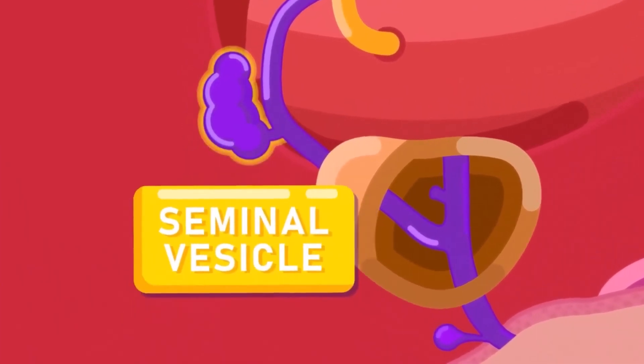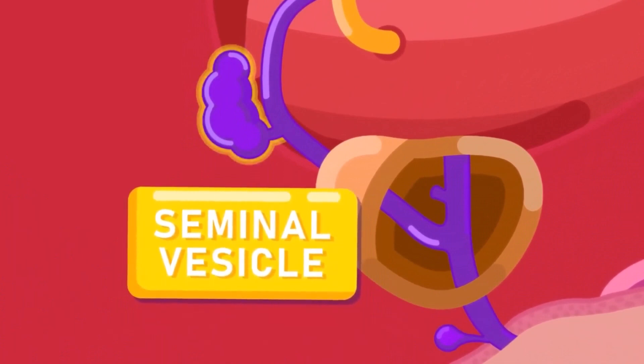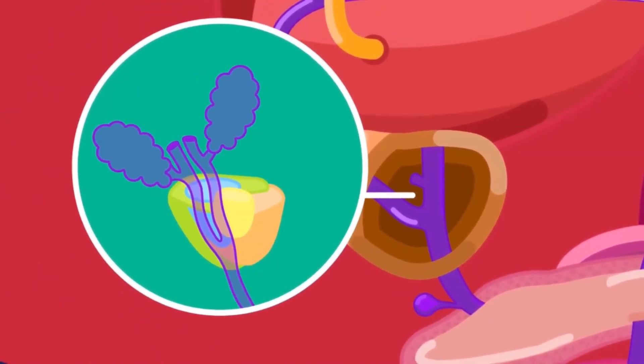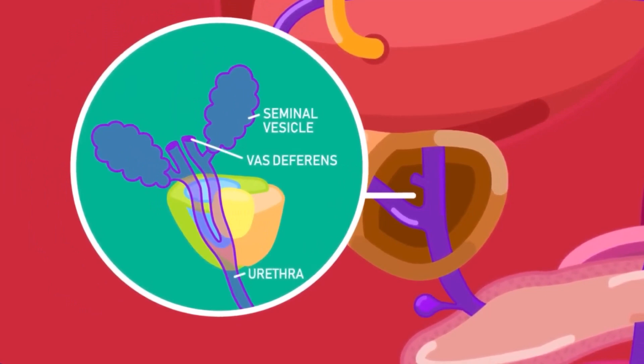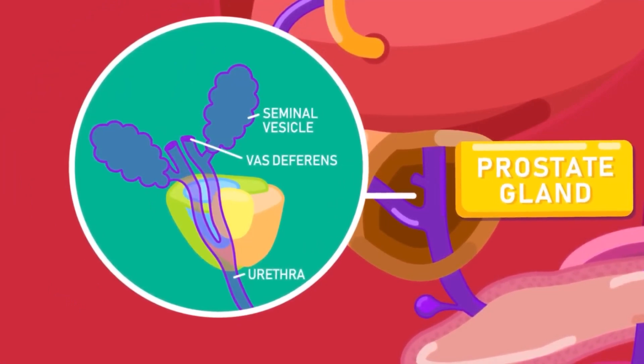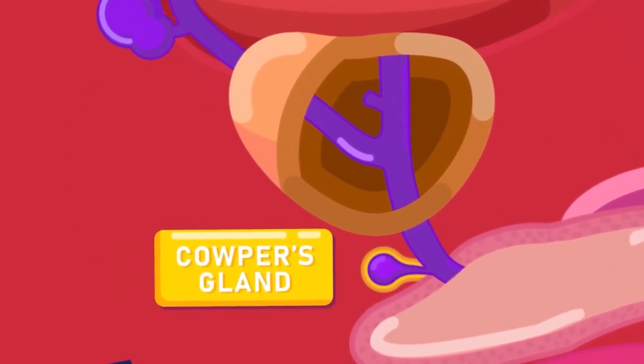A gland called the seminal vesicle opens into each sperm duct. At the base of the urinary bladder, where the two sperm ducts join the urethra, is the prostate gland. Beneath the prostate gland is the cowper's gland.